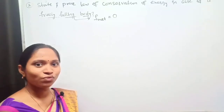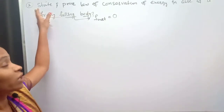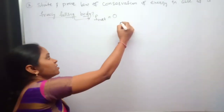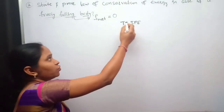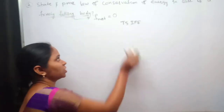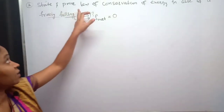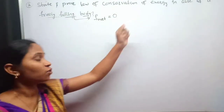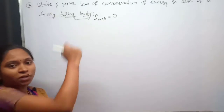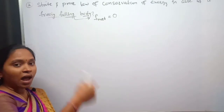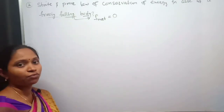Hello students, welcome to Swapna Physics classes. In this class I am going to teach you one more essay question for your TS-IPE examination, that is for first year intermediate examination. The question is: state and prove the law of conservation of energy in case of a freely falling body. In our question, they asked us to give the statement for the law of conservation of energy and then prove whether this law is valid for a freely falling body.